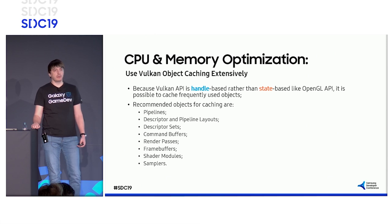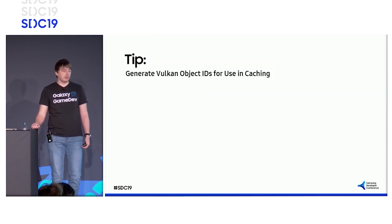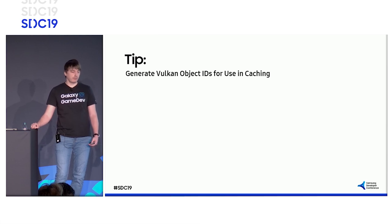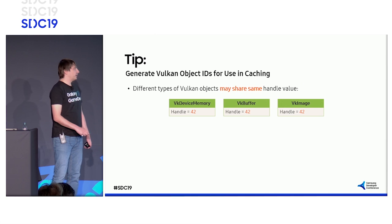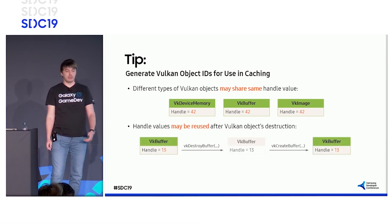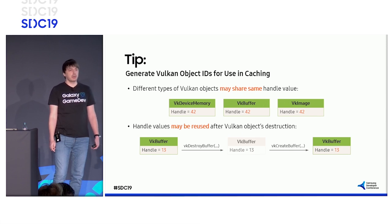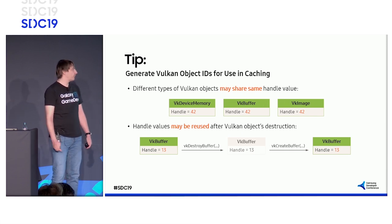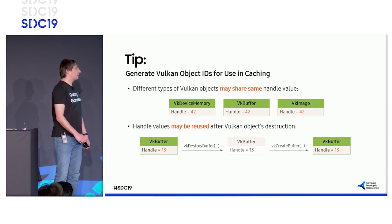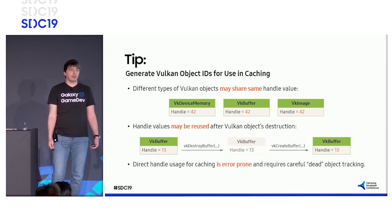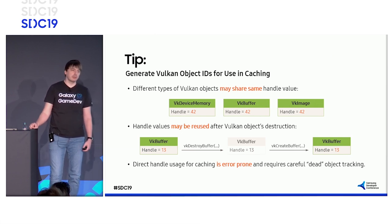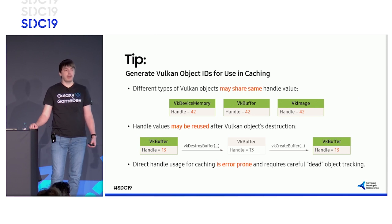Before I begin, I want to give you some advice. Generate Vulkan object IDs for use in caching. According to Vulkan specifications, different object types may share the same handles. Here you can see that memory, buffer, and image all have the same value. More importantly, handles may be reused after object destruction. Buffer 13 was destroyed and then another new buffer was created with the same handle. So if you use handles for caching, you need to be very careful and remove all dead entries. Additionally, this dead object tracking logic may have CPU overheads that make caching inefficient.